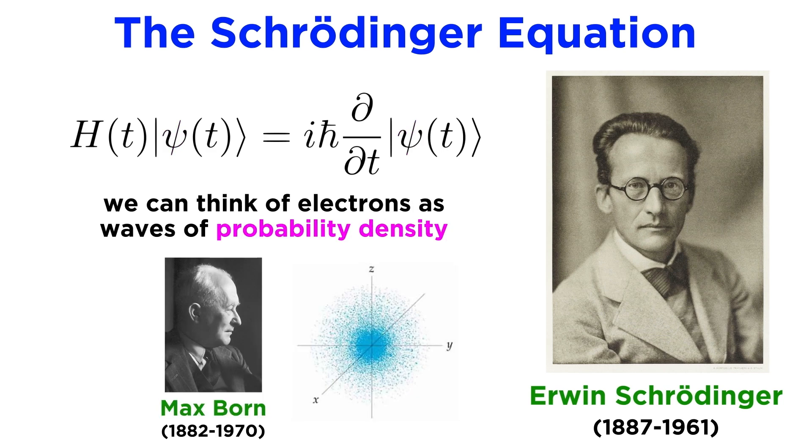This was elucidated further by Max Born, who proposed an interpretation of the wave function that states that they are not physical waves, but rather complex probability amplitudes, and the square of the magnitude of the wave function describes the probability of an electron existing in a particular space. So we can now think of electrons as being waves of probability density distributed around particular regions in space.